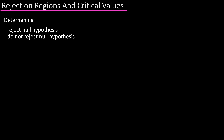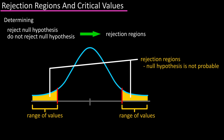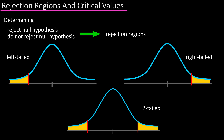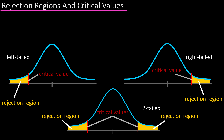In determining whether or not to reject the null hypothesis, one method you can use is to find rejection regions. A rejection region is an area or range of values under a standard normal distribution where the null hypothesis is not probable. Here are graphs for a left-tailed, a right-tailed, and a two-tailed test, and these shaded areas would be rejection regions, and these red lines are critical values.